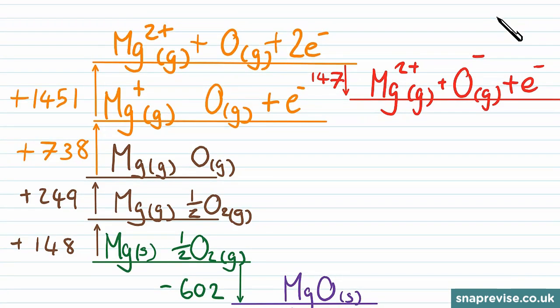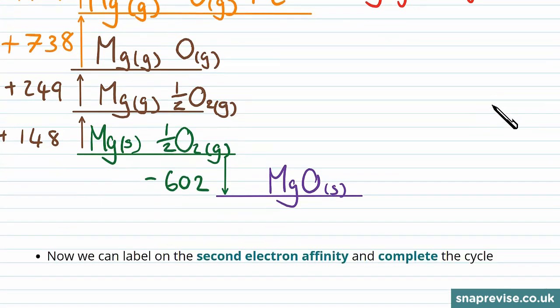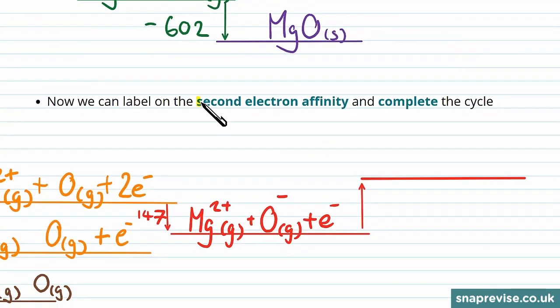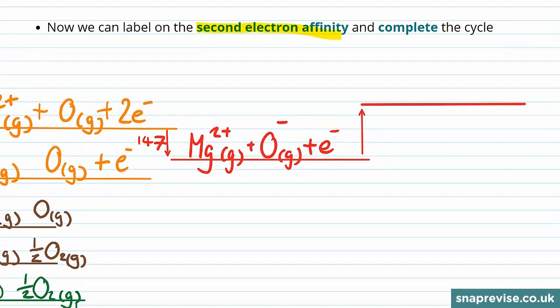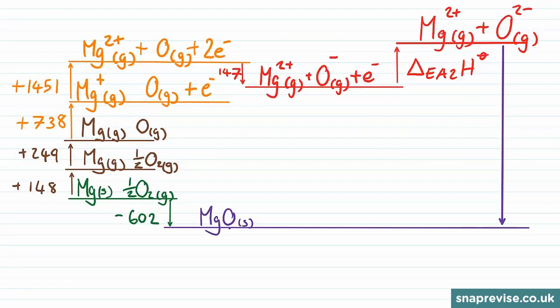Now the next stage would be to combine this electron with the oxygen to get a two minus ion. And this is the stage that we don't know, the second electron affinity that we're trying to find. It will take us to our final stage in the Born-Haber cycle. So we've got our Mg2 plus gaseous ions, and we've got our O2 minus gaseous ions. But we don't know yet what the energy change is, which is given the symbol EA2 H standard. We've now drawn on our final energy change, which is the lattice energy, the last one given in the equation, which is a drop of minus 3830 kilojoules per mole.